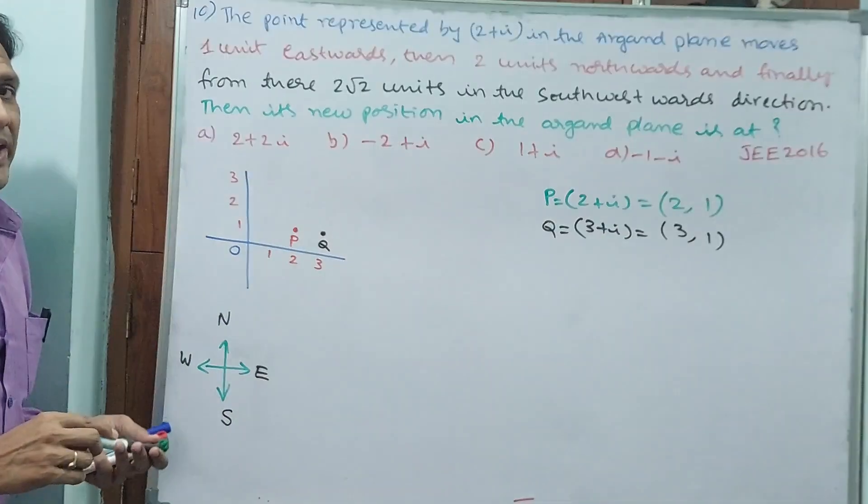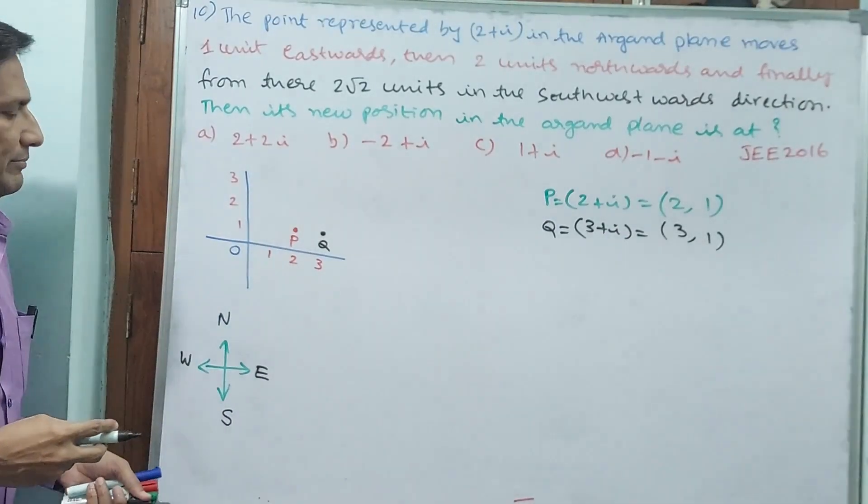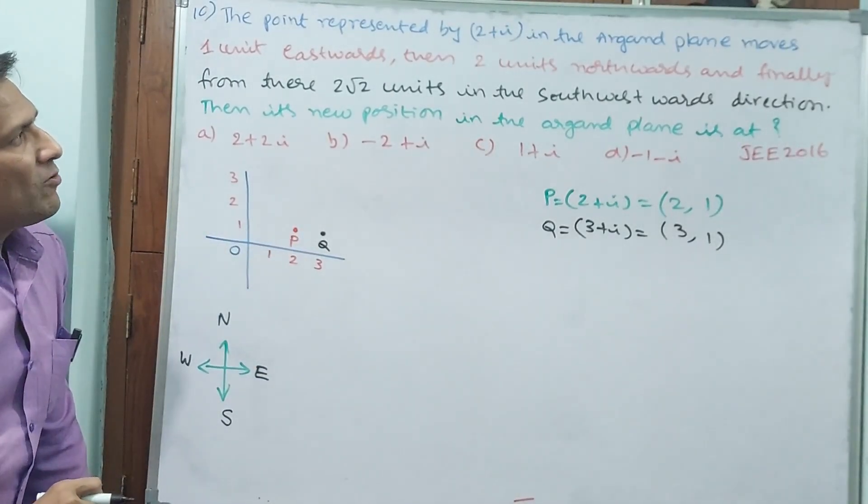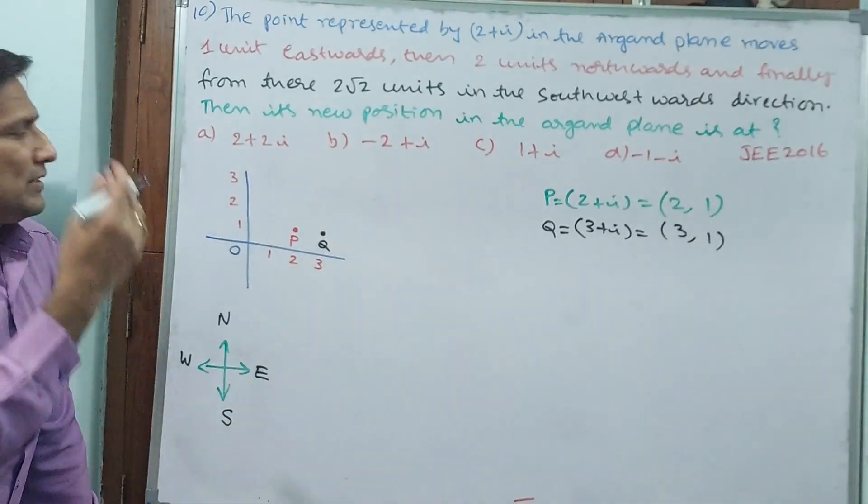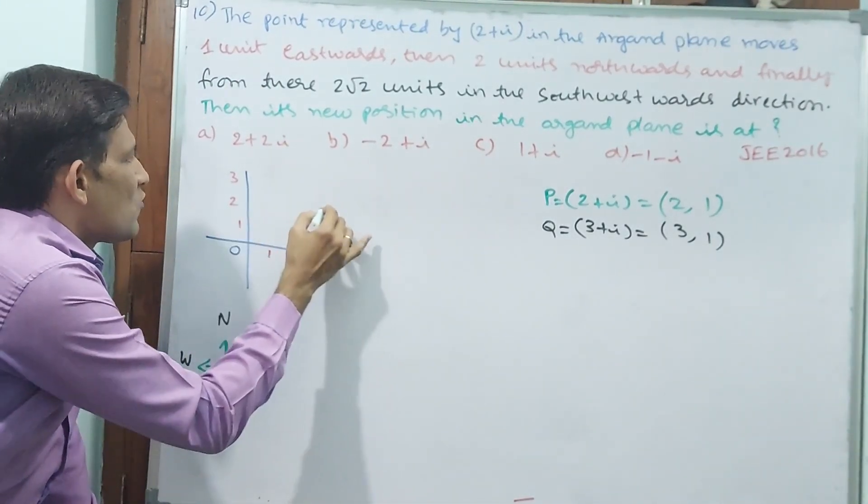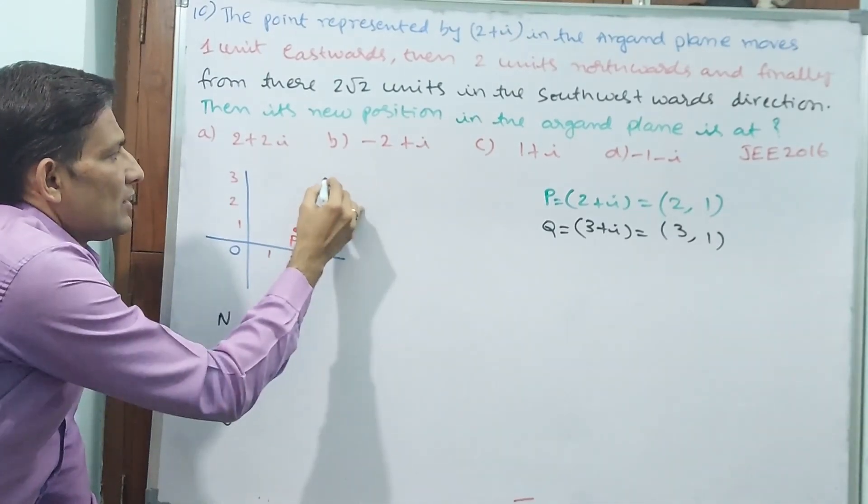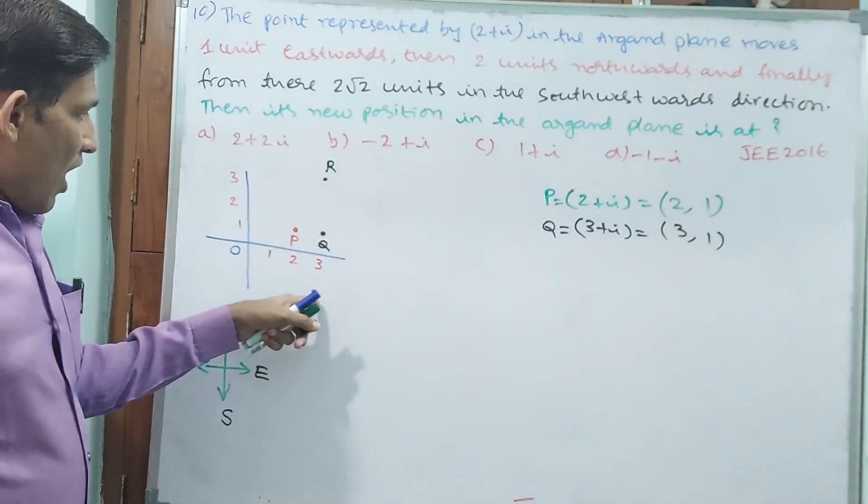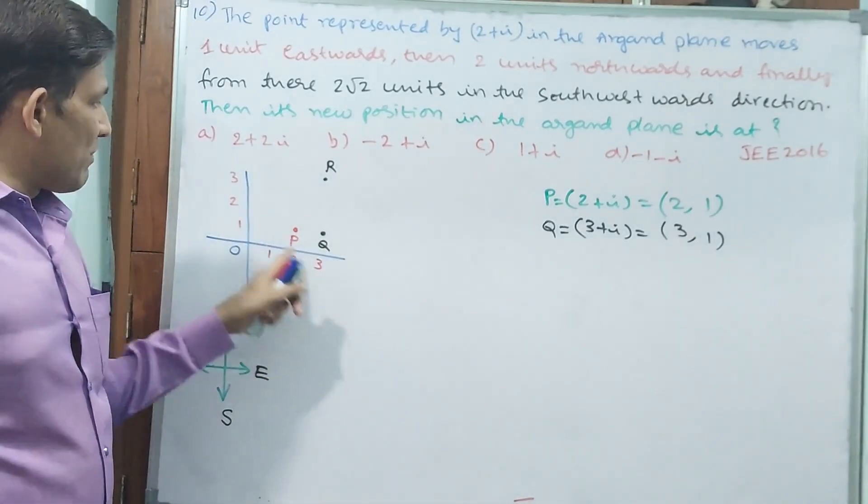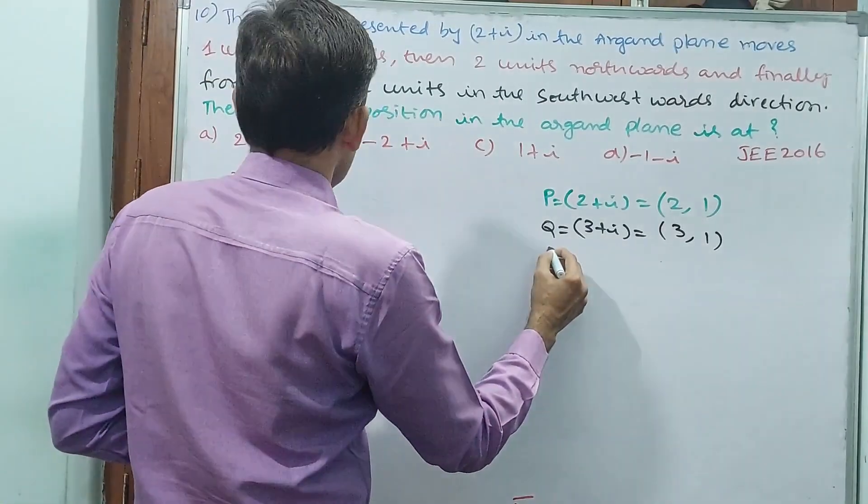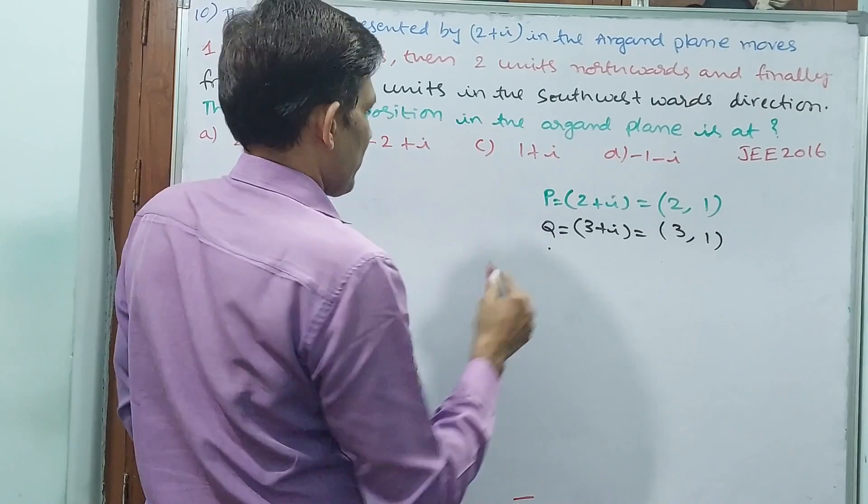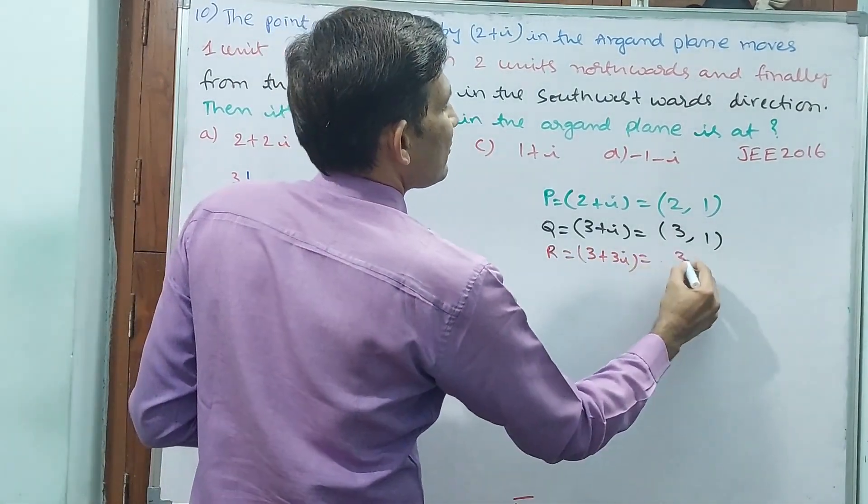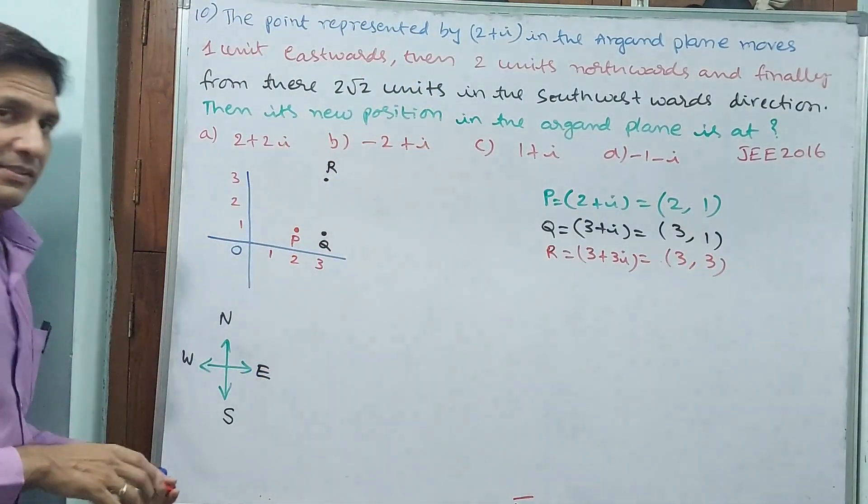Like some vector knowledge if you have, this can be understood easily. In eastwards, 1 unit has moved. Now again, it has moved 2 units northwards. From here 2 units. Already 1 is there, 2 and 3. Now I am taking this as R. For R, x-axis is 3 only, but y-axis is 3 again. That means, R is equal to 3 plus 3i. R is 3, 3.